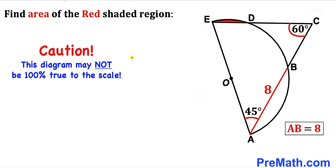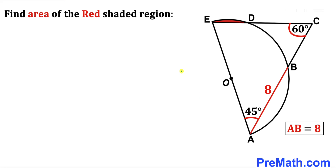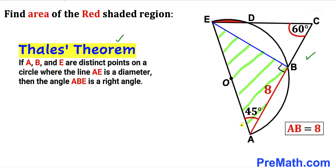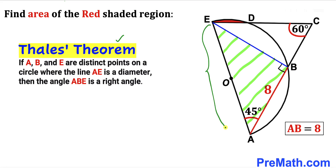Keep in mind that the figure may not be 100% true to scale. In the first step, I've created auxiliary line EB by connecting points E and B. Now let's recall Thales' theorem: if A, B, and E are three distinct points on a circle where line AE is the diameter, then angle ABE is a right angle.